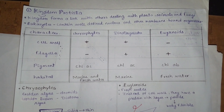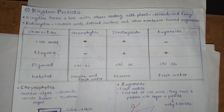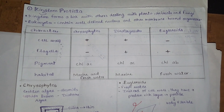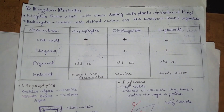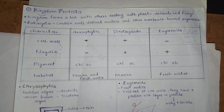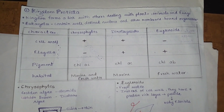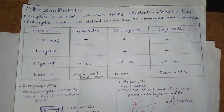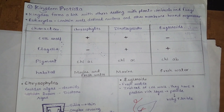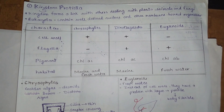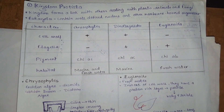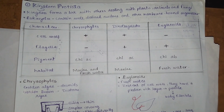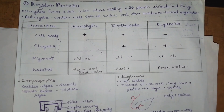Since Protista is unicellular and eukaryotic, it will obviously contain a nucleus and all membrane-bound organelles. The membrane-bound organelles include the Golgi apparatus, endoplasmic reticulum, vacuoles, and so on.